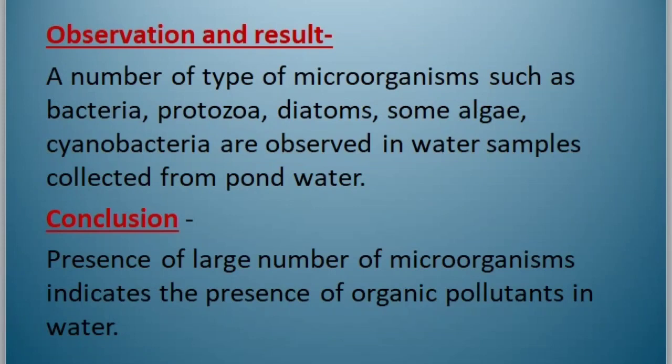Observation and result: a number of types of microorganisms such as bacteria, protozoa, diatoms, some algae, cyanobacteria are observed in water samples collected from pond water. Conclusion: presence of large number of microorganisms indicates the presence of organic pollutants in the water body.